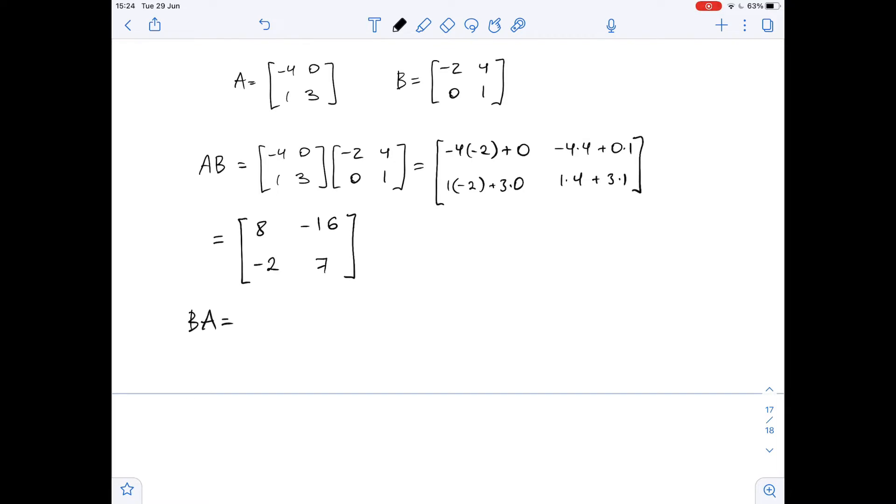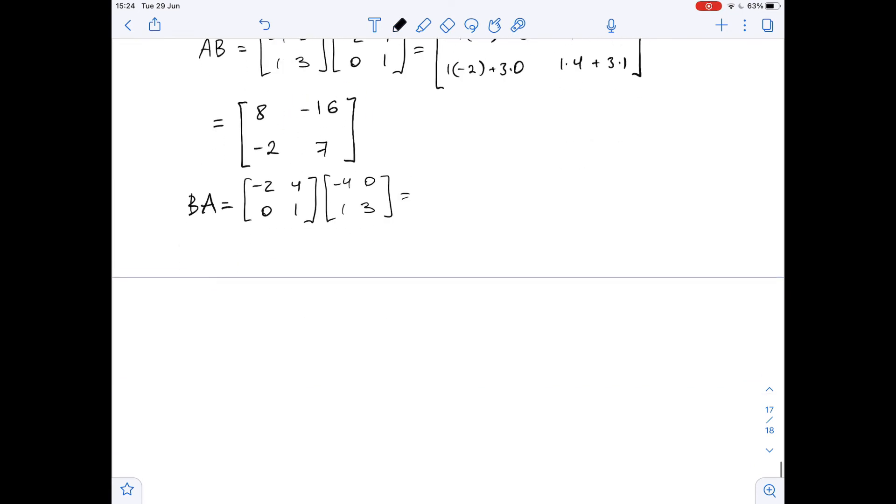BA equals matrix B times matrix A. Again, we find the dot product of the rows and columns. So, here it's negative 2 times negative 4 plus 4 times 1, then negative 2 times 0 plus 4 times 3, 0 times negative 4 plus 1 times 1, and 0 times 0 plus 1 times 3.